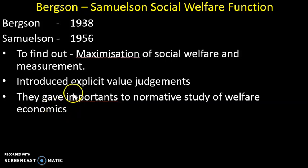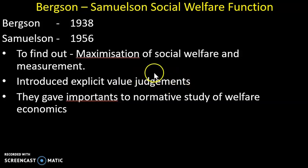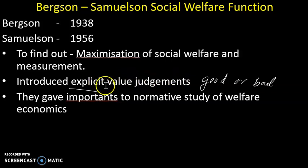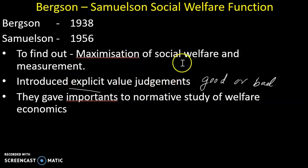In this theory, explicit value judgments are introduced. A value judgment refers to calling one thing good or bad. Explicit means it is based on data — it is correct and provable. These explicit value judgments are based on how to maximize social welfare.